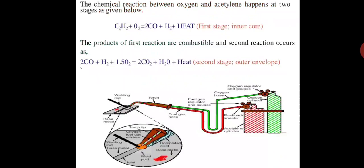The chemical reaction between oxygen and acetylene takes place in two stages. The first stage is the inner core and the second stage is the outer envelope. In the inner core, acetylene and oxygen combine; the tip of the inner cone is the hottest point of the flame. The acetylene breaks down and partly burns to hydrogen and carbon monoxide, which in the outer cone combines with more oxygen from surrounding air and burns. The figure shows the various equipments used in the gas welding process.